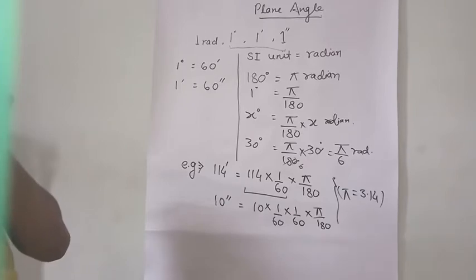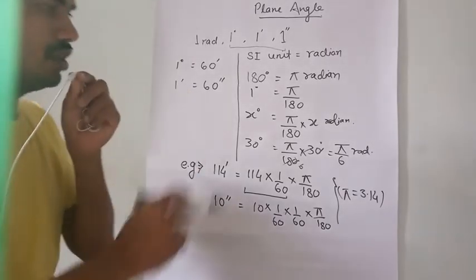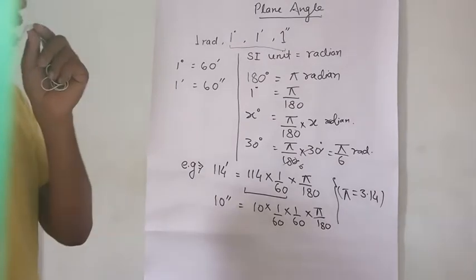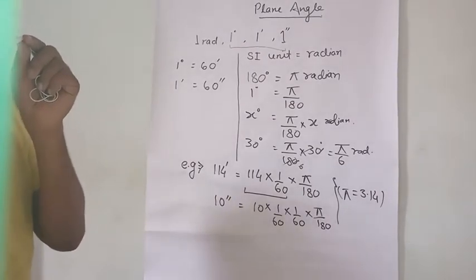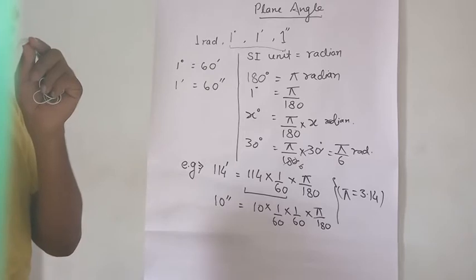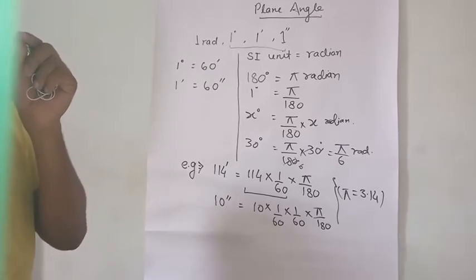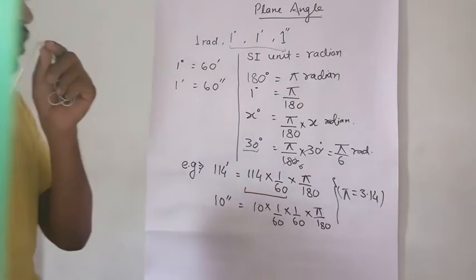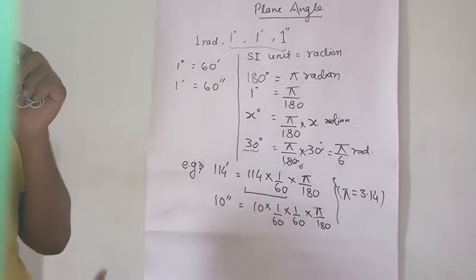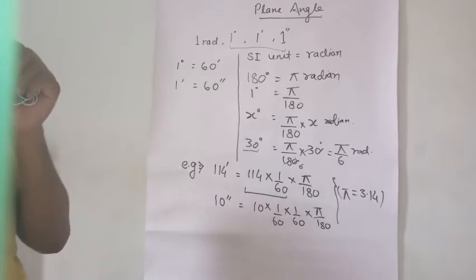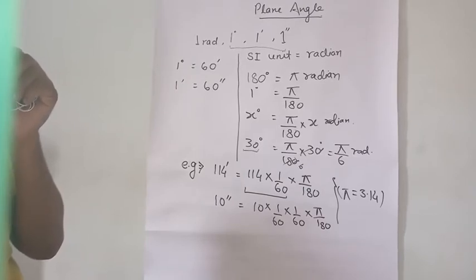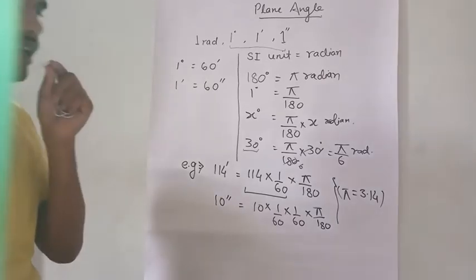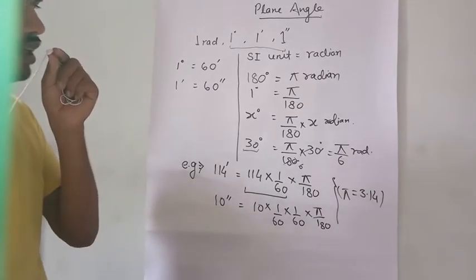The three unit systems are minute, second, and degree. One line you have to learn: in 180 degrees there is pi radian. So in one degree there will be pi by 180 radian, and in x degrees there will be pi by 180 into x radian. For example, to convert 30 degrees into radian, the multiplication factor is pi by 180, so pi by 180 into 30 becomes pi by 6.